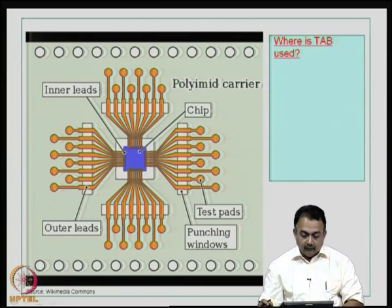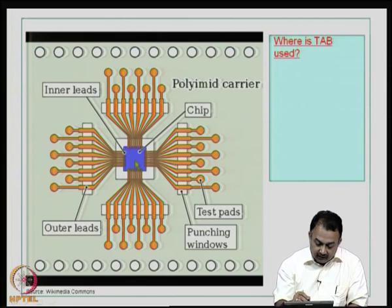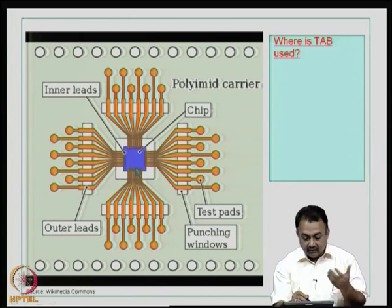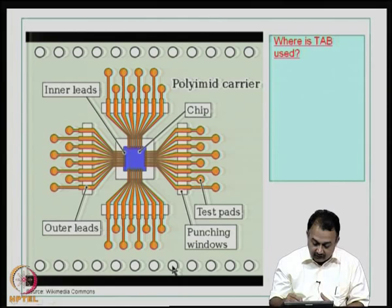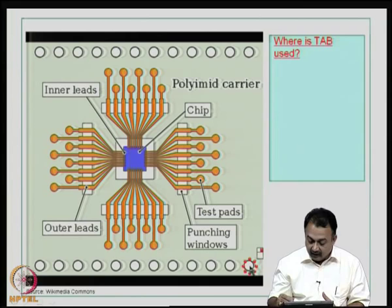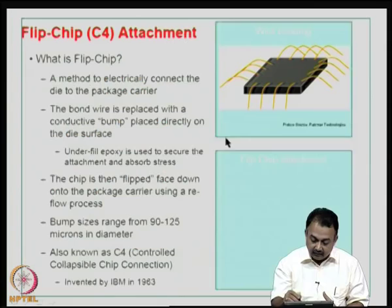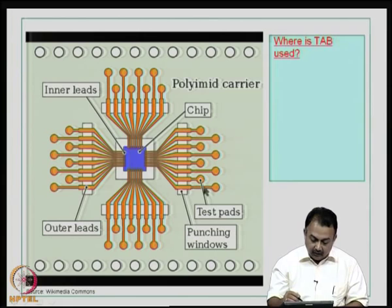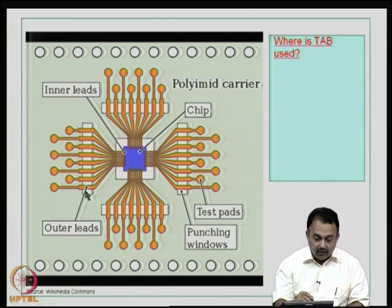Looking at this picture more clearly: at the center you can see the die — the blue color material is the die coming from underneath. This material is the polyimide tape which has got perforations because it comes in reel form and needs to be attached to the TAB equipment. Then these are the lead frames. Using thermal compression bonding from the top, you can establish connection between the lead frames and the bond pads on the die. These are known as inner leads, and these are known as outer leads. A TAB process will involve two types of bonding: inner lead bonding and outer lead bonding.